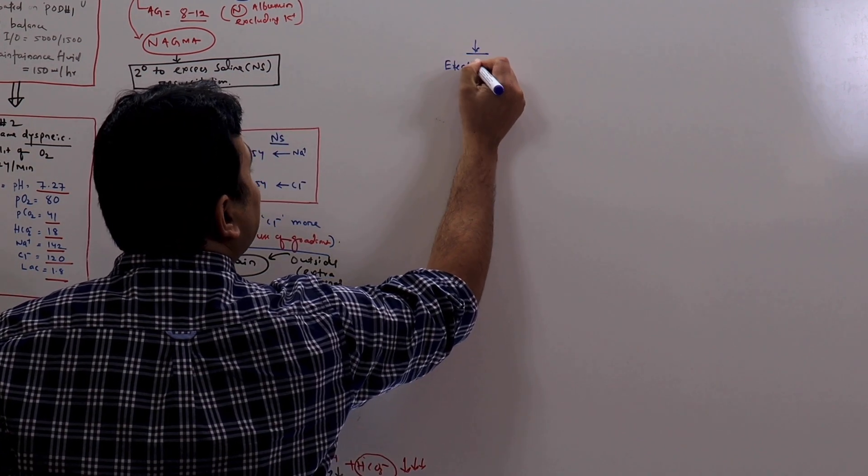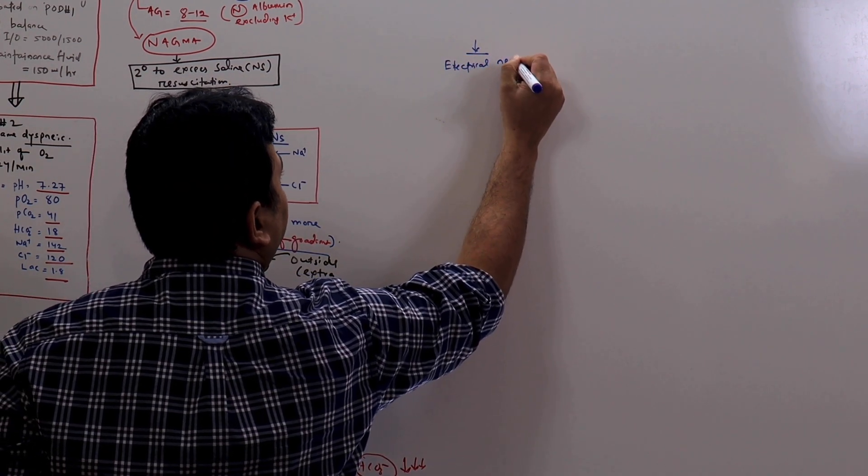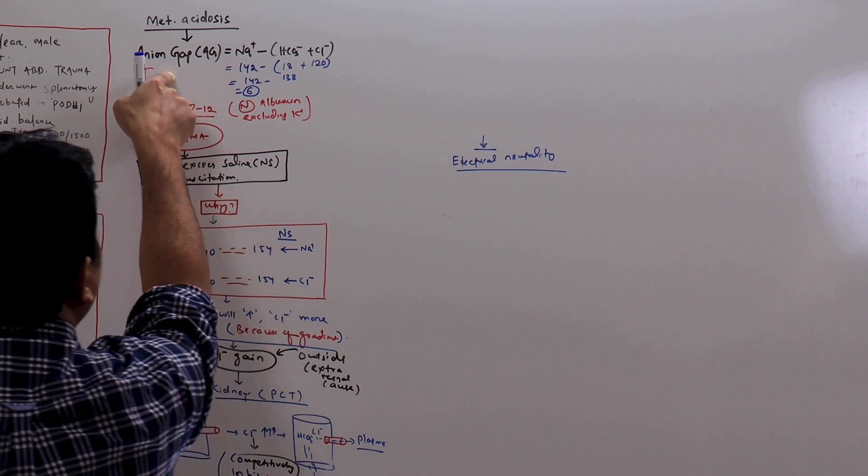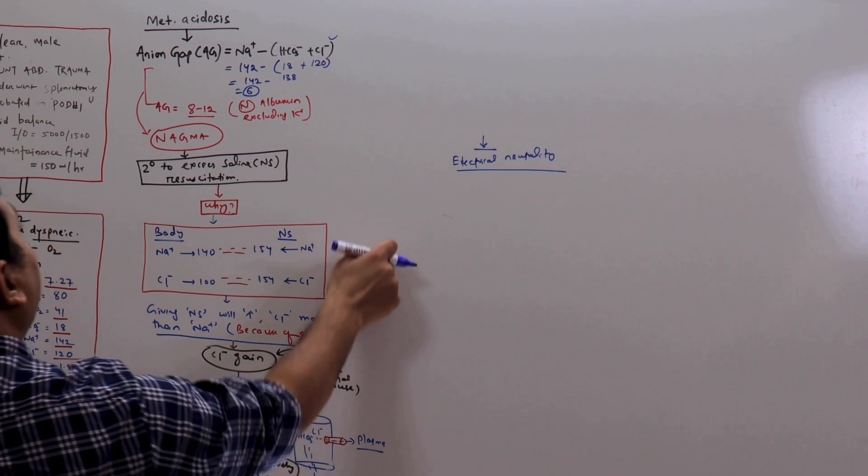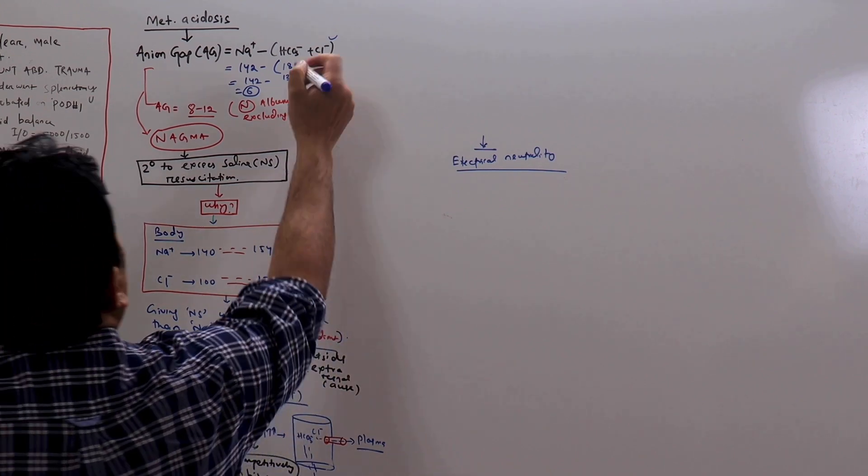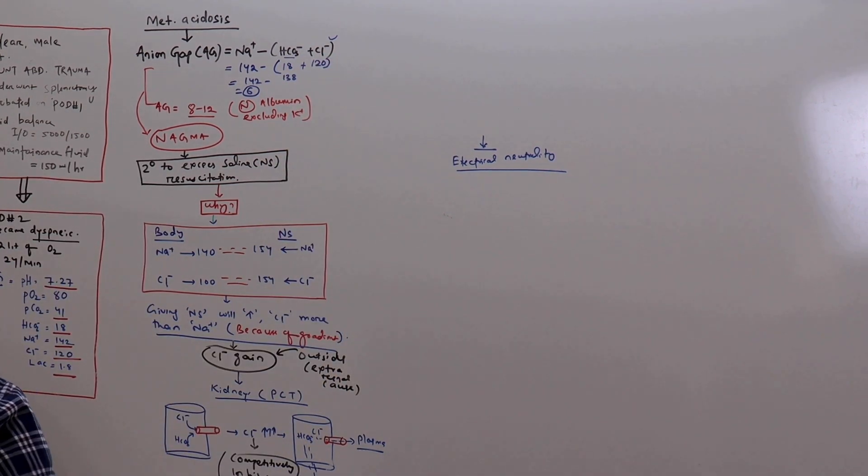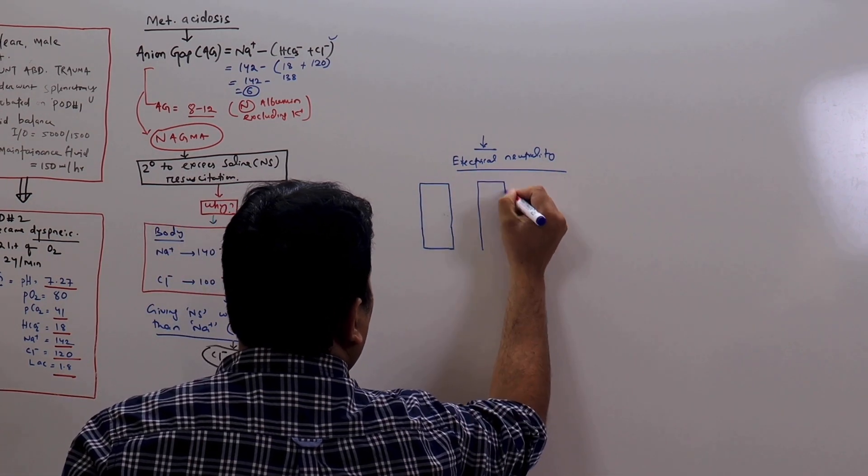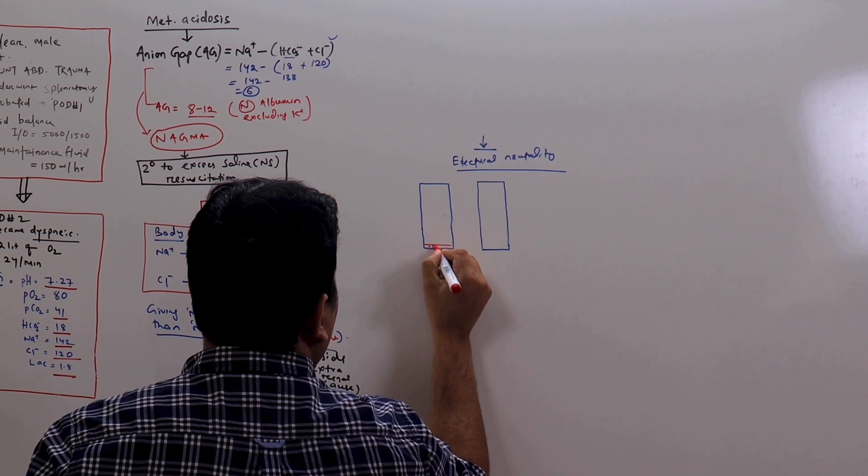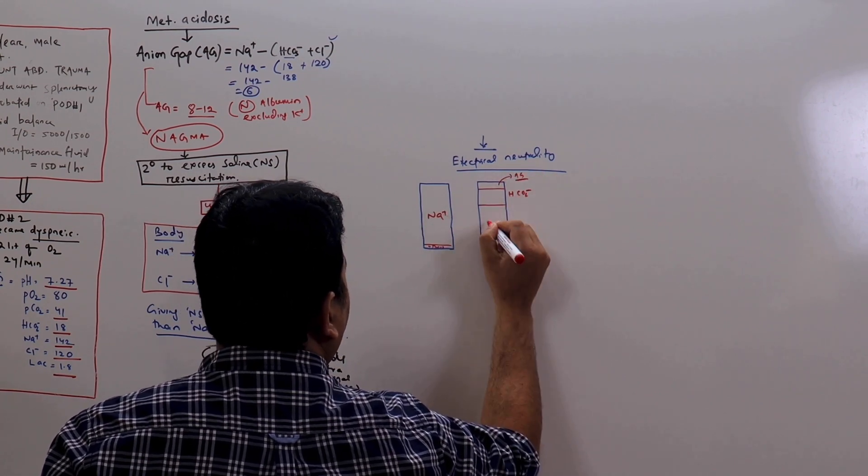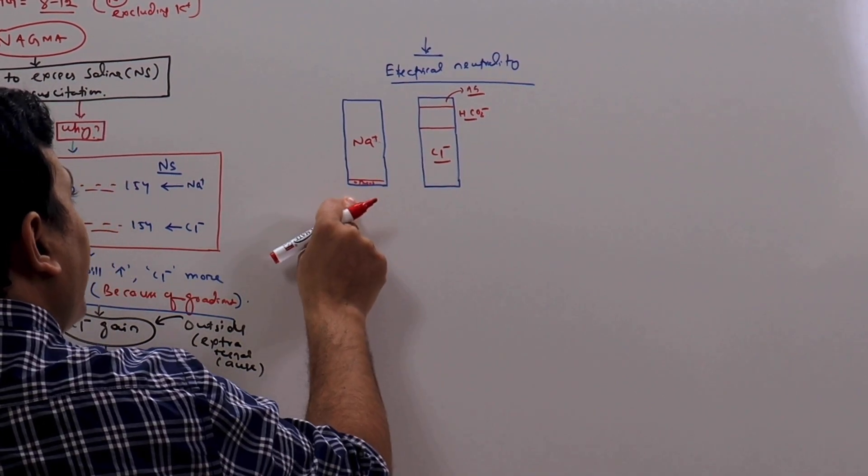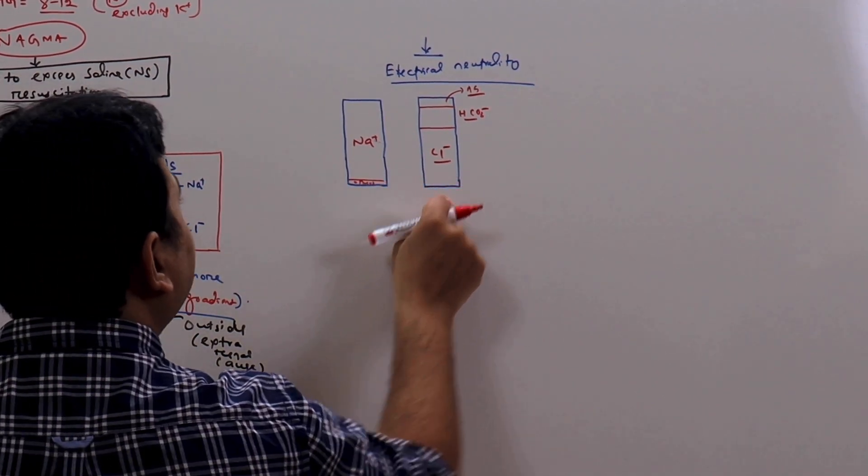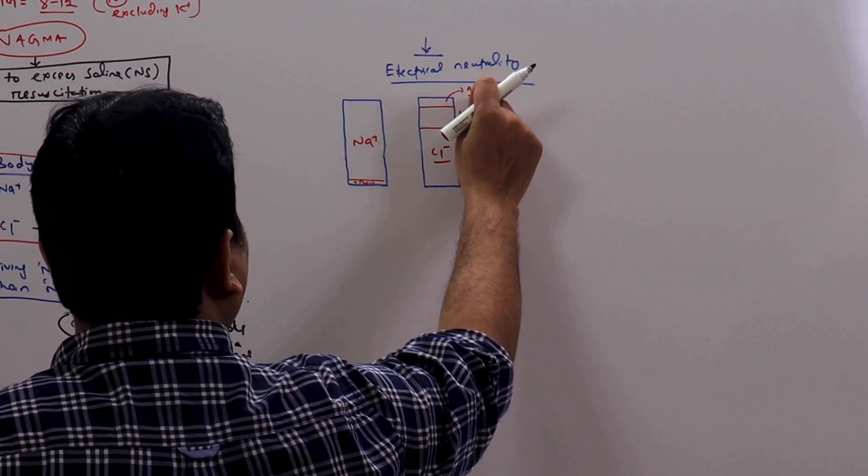The concept of electrical neutrality. As you can see here, the normal anion gap acidosis can be produced by chloride gain. At the same time, it can also be produced by bicarbonate loss. Let us discuss a situation where there is bicarbonate loss. This is the cation and anion. Number of cations must be equal to number of anions. This is the electrical neutrality concept. This is the normal anion gap. The unmeasured cation in the body constitute the normal anion gap.